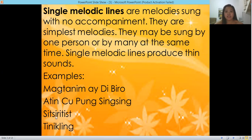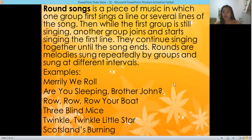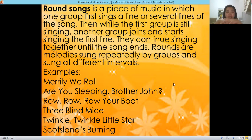We also have round songs. A round song is a piece of music in which one group sings first a line or several lines, and then while the first group is still singing, another group joins and starts singing the first line — remember 'Are You Sleeping'? They continue singing together until the song ends. Round songs are melodies sung repeatedly by groups at different intervals. This is an example of thick texture.